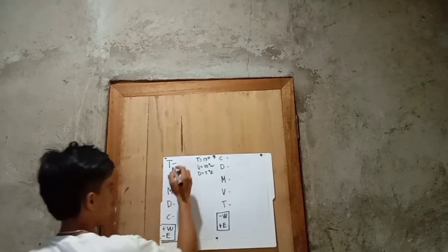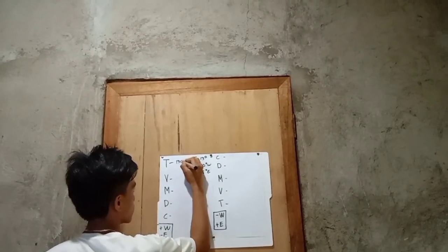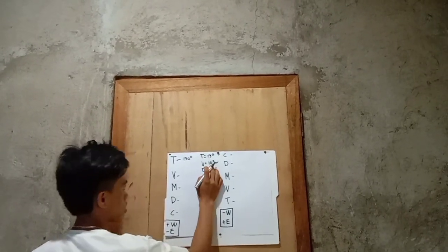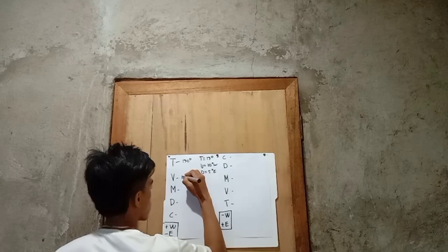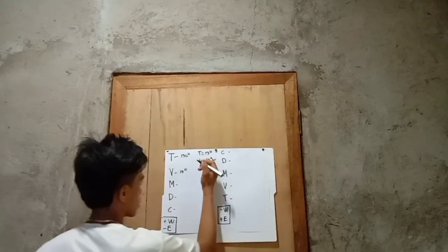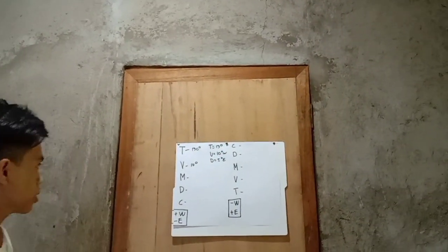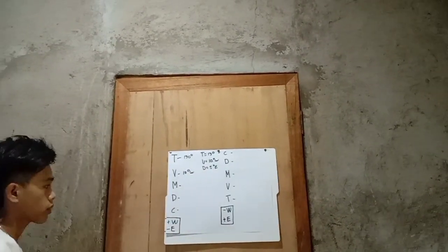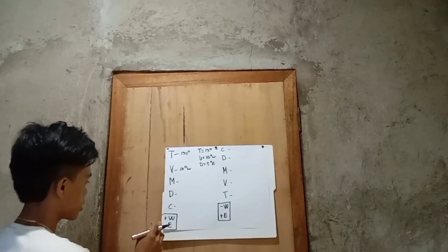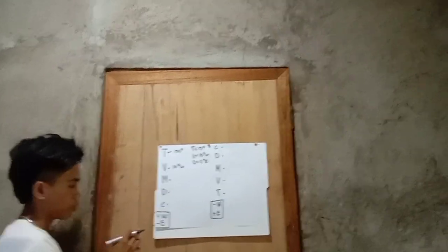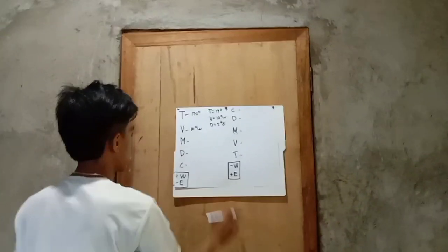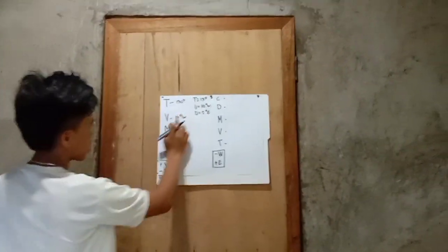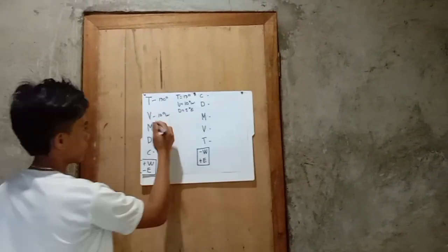So, our true course is 130 degrees. The variation is 10 degrees west. So, our golden rule: if west, we must add, and east, we will subtract. So, 130 degrees plus 10 degrees equals 140 degrees.